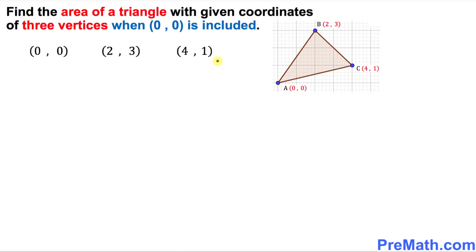Welcome to pre-math. In this video tutorial I am going to show you a real simple and easy way to find the area of this given triangle which has three vertices, as you can see. The condition is that one of these vertices must be at zero zero, that means it must be at the origin — and as you can see, one of our vertices is zero zero.